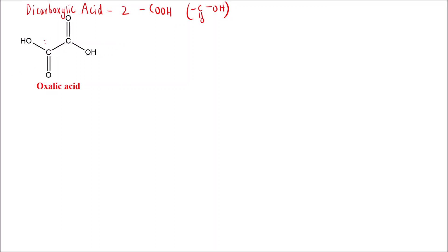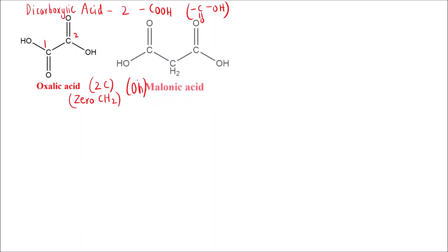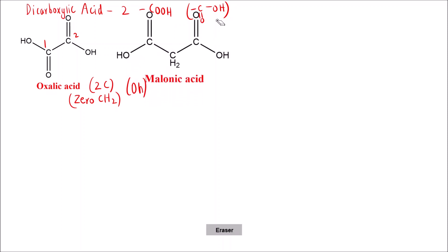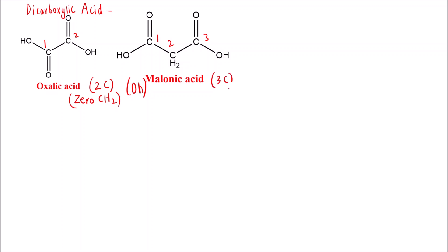The first one is oxalic acid — a two-carbon dicarboxylic acid with zero methylene (CH₂) groups. 'O' stands for oxalic acid in our mnemonic. Next is malonic acid, which has three carbons and one CH₂ group. 'M' stands for malonic acid.